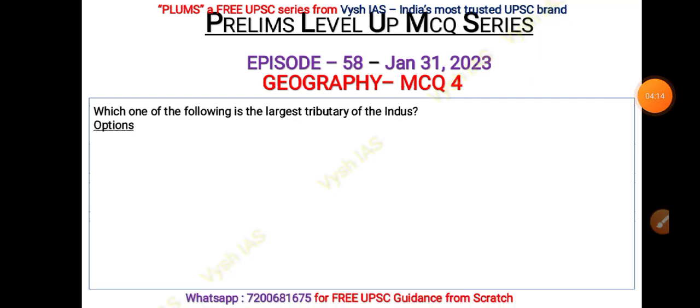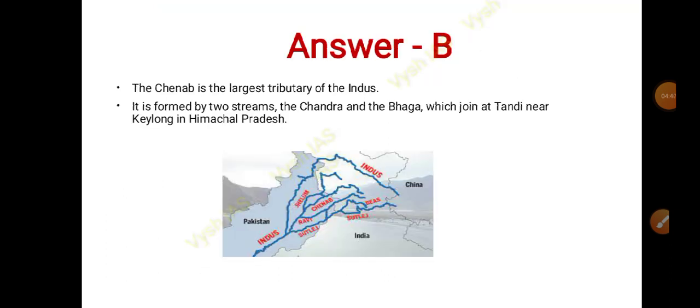The fourth question: which of the following is the largest tributary of the Indus River? This is a very important question — you should be knowing everything about the Indus River system. Options are: A) Ravi, B) Chenab, C) Beas, D) Jhelum. The answer is B — Chenab is the largest tributary of the Indus River system.